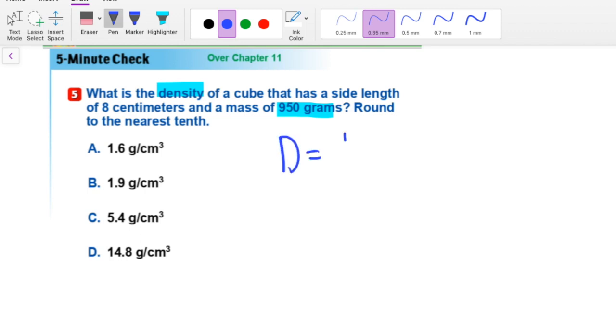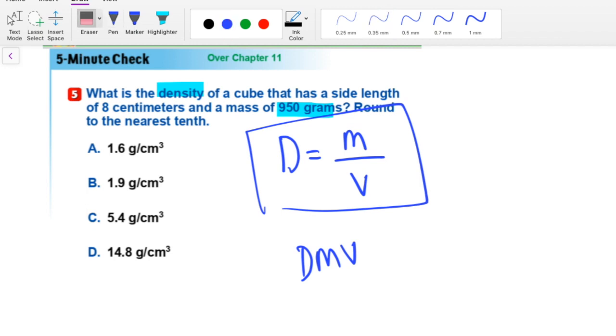Density equals mass over volume. And the way I remember this formula right here is DMV. DMV is where cars get the registration and other things. So I just remember DMV and then I remember the letter D comes first, then M and then V. I'm not sure if that helps you remember it, but I've been remembering it that way for a couple years now. So I think it's a pretty good strategy.